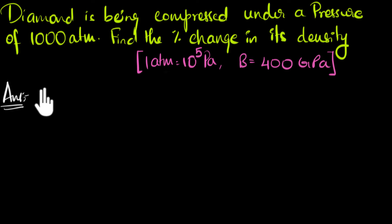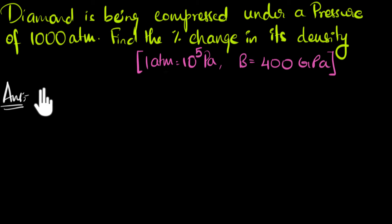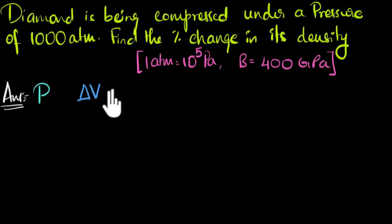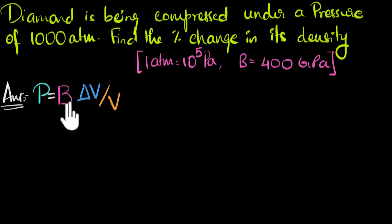So the first thing we'll do is write the expression — that's Hooke's Law. Hooke's Law tells us that bulk stress, which is the same as pressure, is proportional to bulk strain. Bulk strain is the change in volume per unit volume, and that proportionality constant is the bulk modulus, B. We've talked about this in previous videos.